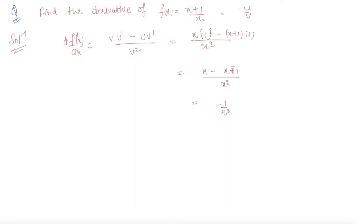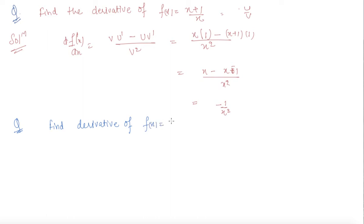The differentiation of that function is −1/x². Now let us do one more question on trigonometric functions: find the derivative of f(x) = sin²x.